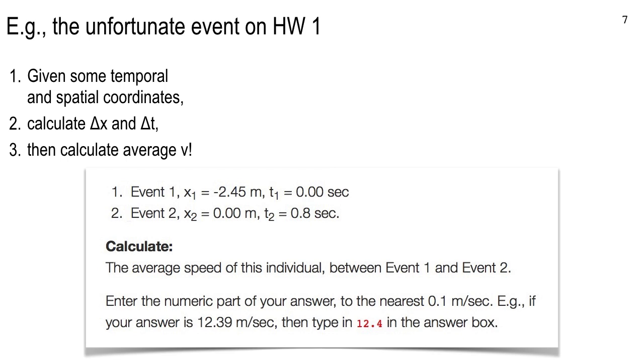Below the task here where it says calculate, I always have a little paragraph there, and I want you to be aware of that. I'll always tell you to enter the numeric part. I'm never going to ask you to type in meters per second. I only want the number. If your answer is 12.39 meters per second on paper, on your scratch work or your notes, all I want you to do is type in the numeric part, 12.4. And I always tell you how to round it off as well.